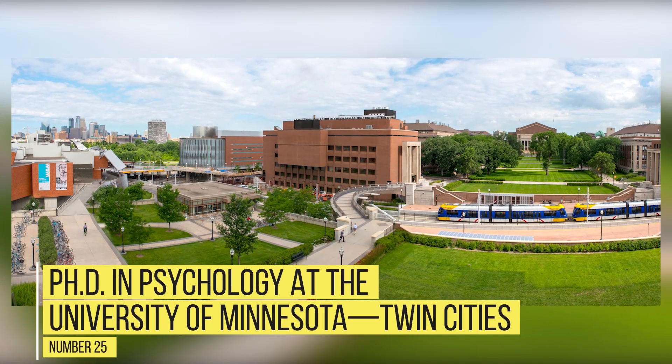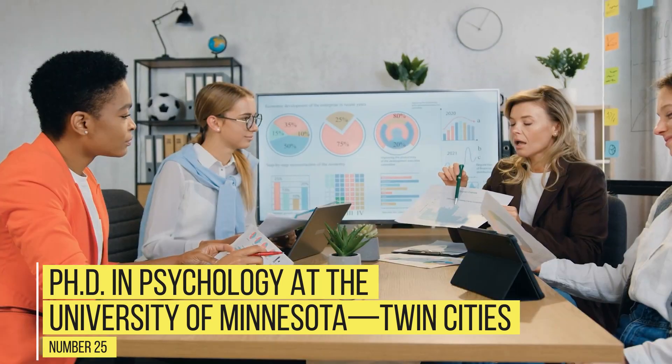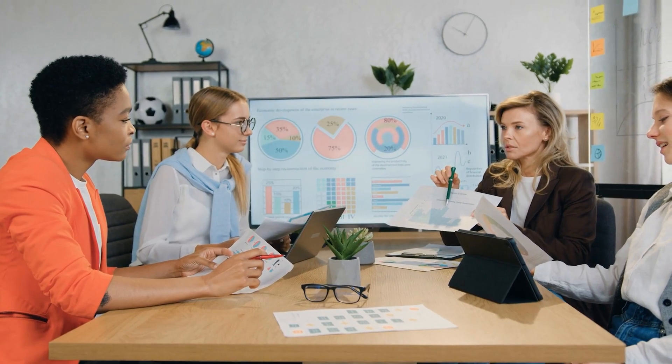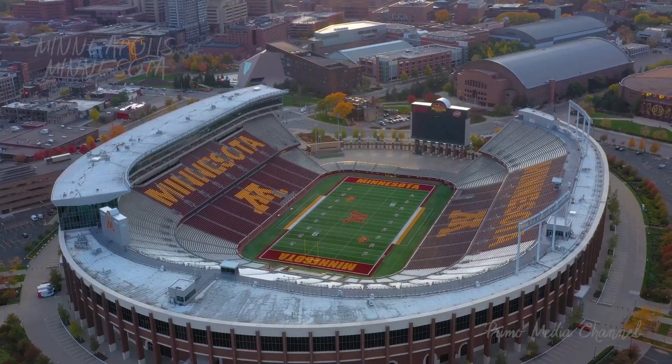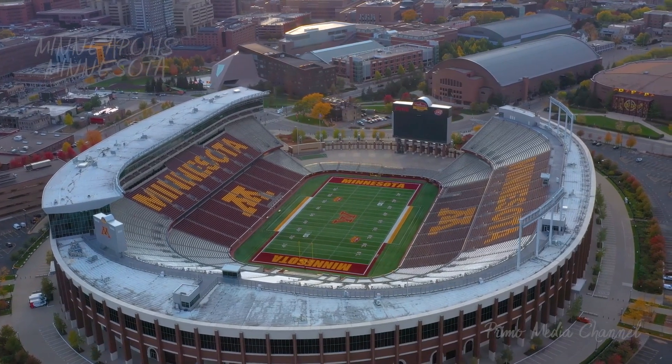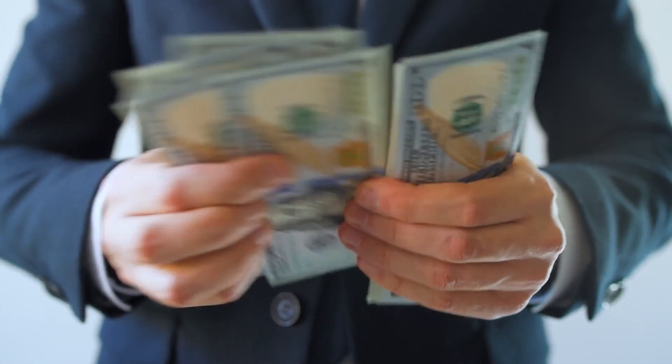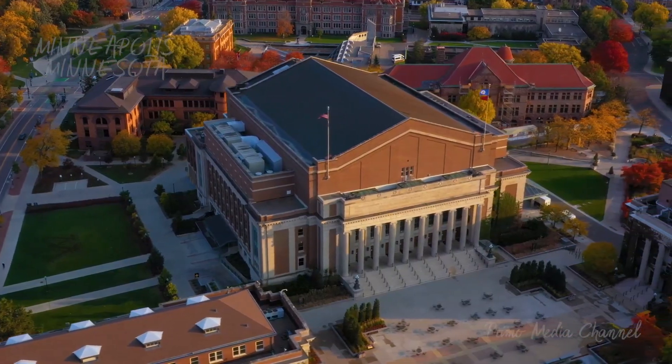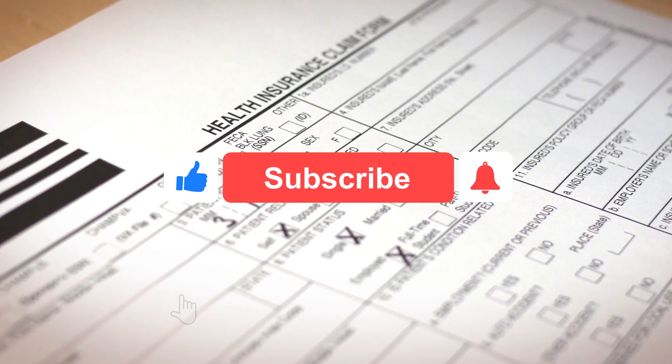Number 25: PhD in Psychology at the University of Minnesota, Twin Cities. Students admitted to the PhD program to study psychology at the University of Minnesota Twin Cities are guaranteed five years of full funding as long as they maintain satisfactory performance and degree progress. This funding includes full-time tuition, subsidized health insurance, and a nine-month stipend.